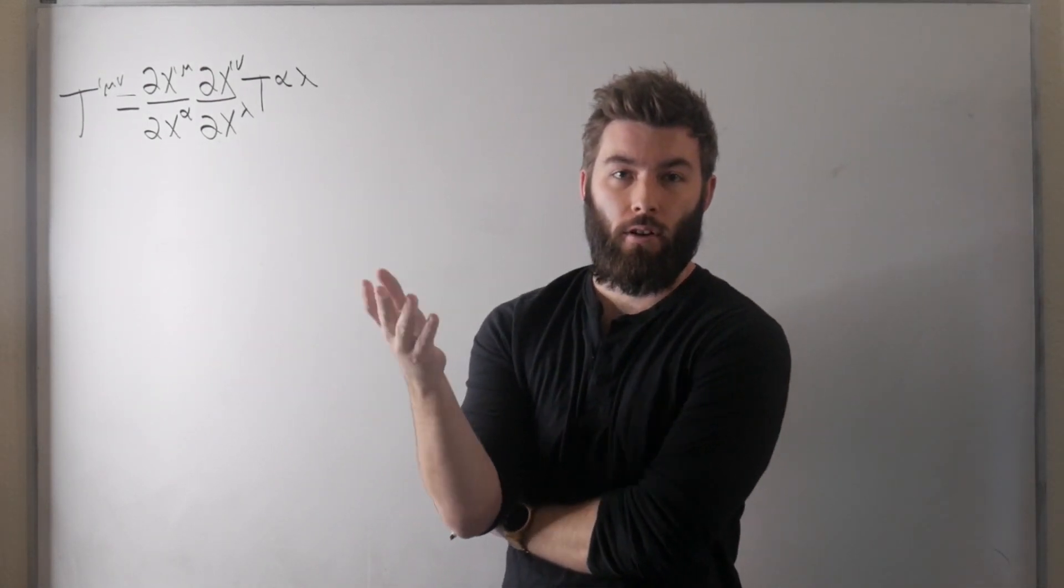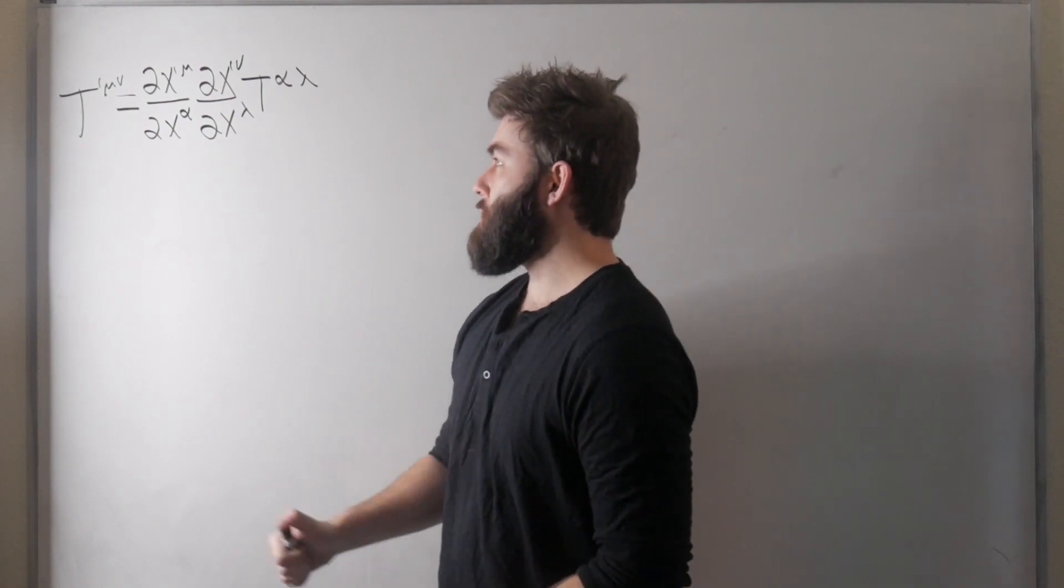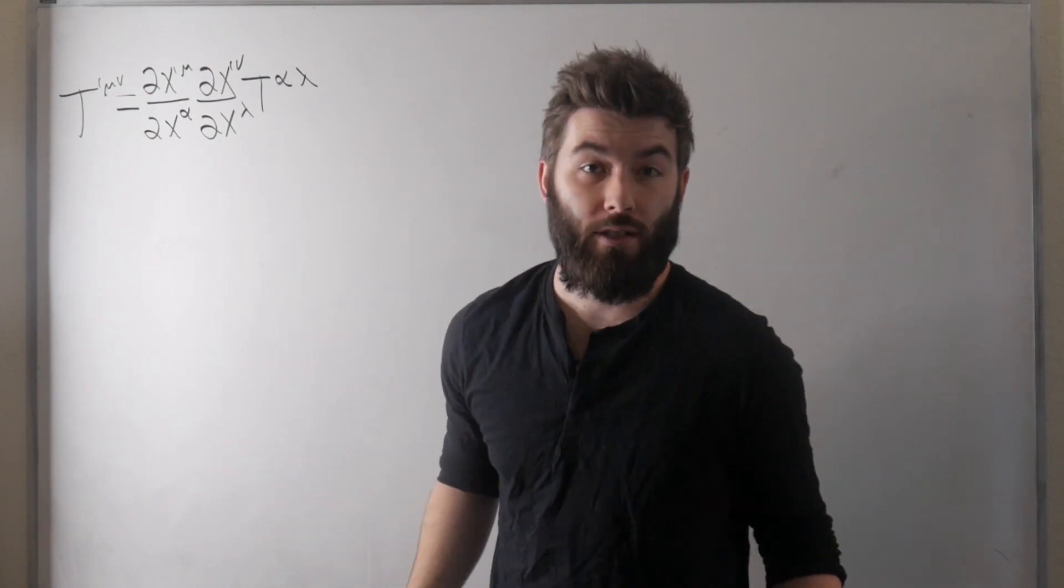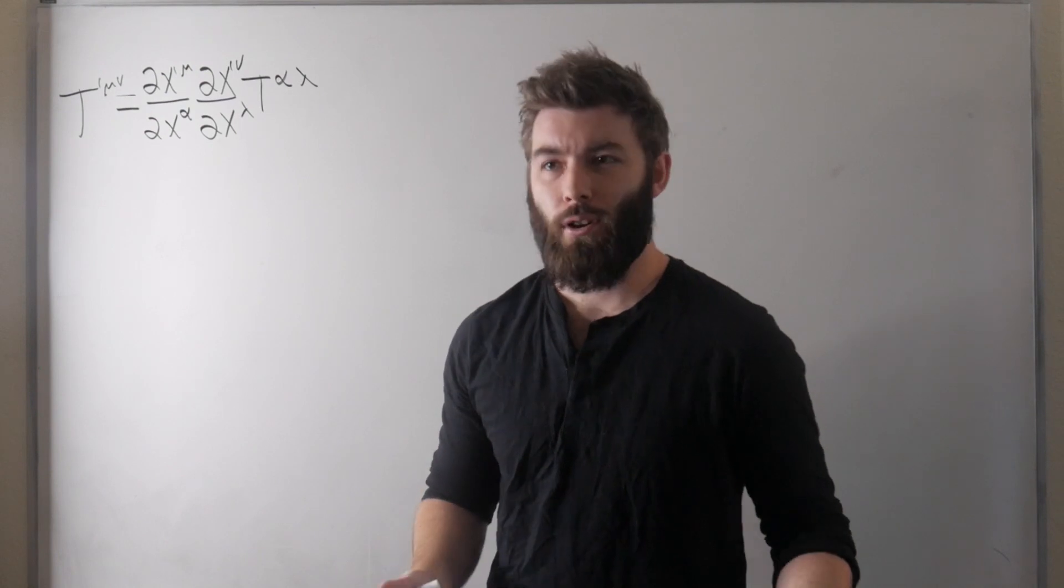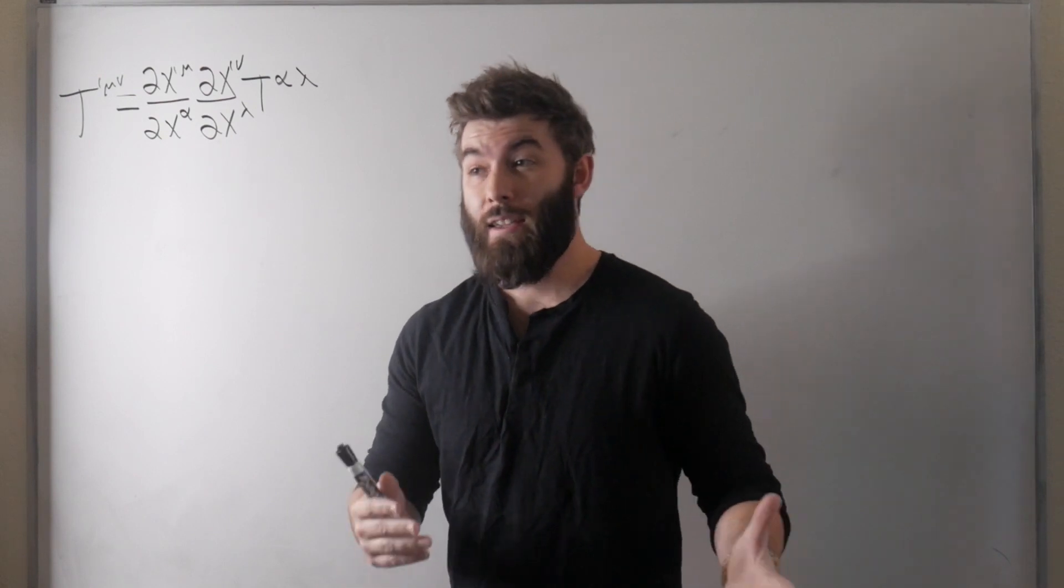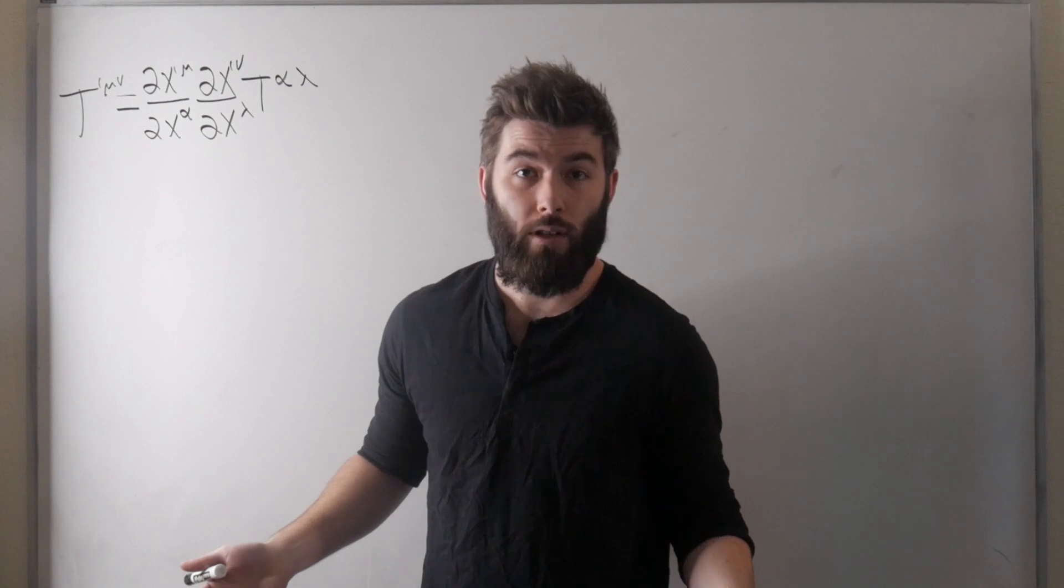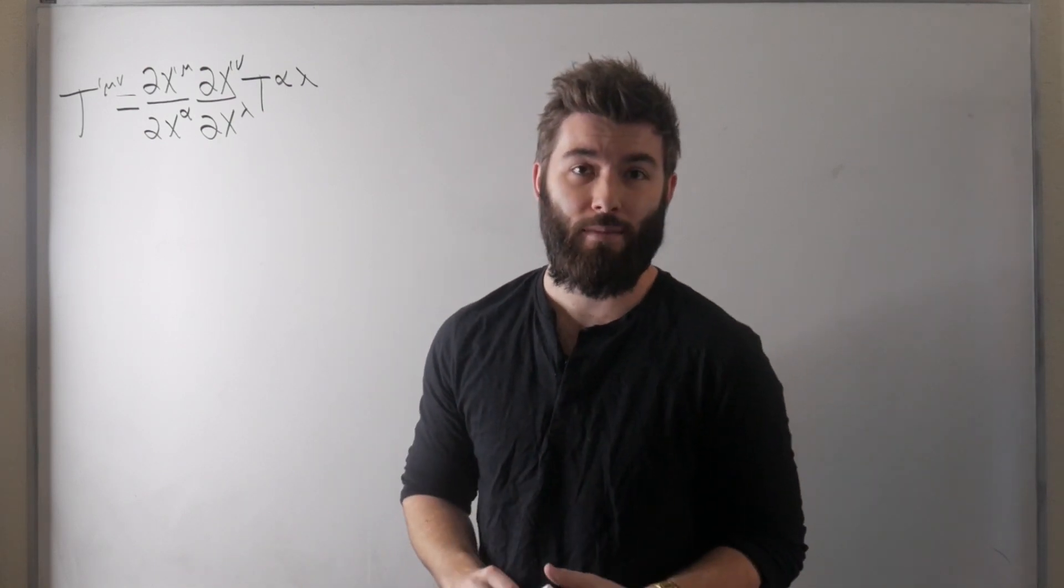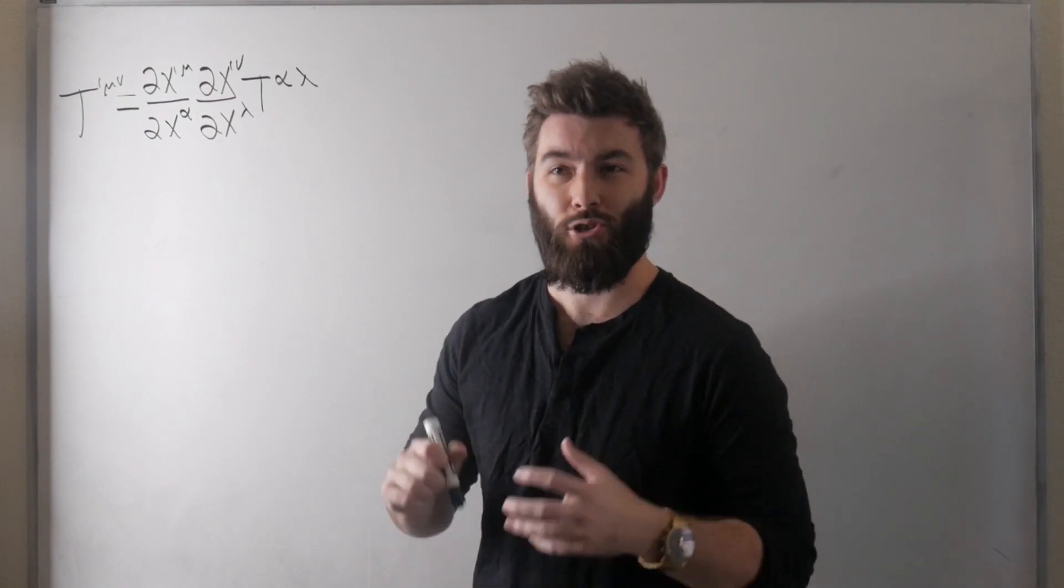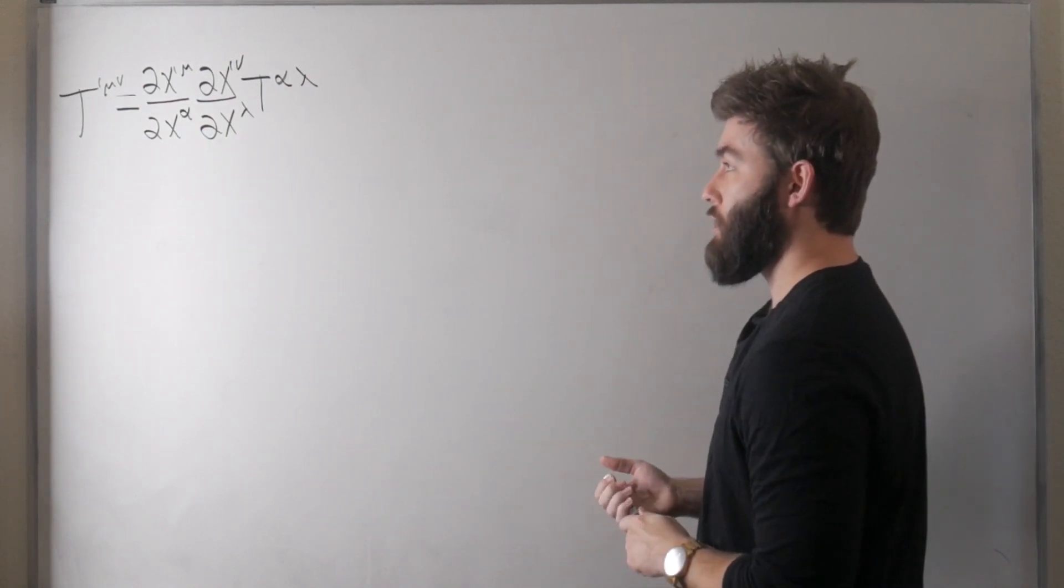Now whenever someone says something transforms as a tensor your question should always be under what transformations are we considering and typically if you see something indexed with greek indices that means we're probably considering Lorentz transformations. For fields like quantum field theory or special relativity that's what we're going to be considering. If you go to something like general relativity you're widening your scope to more general coordinate transformations called diffeomorphisms. We're not going to be getting that technical in this video we will talk a little bit about general relativity but just throwing that buzzword at you that's something to consider but you should always know what transformations you're considering.